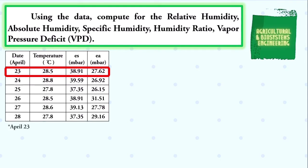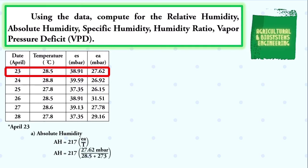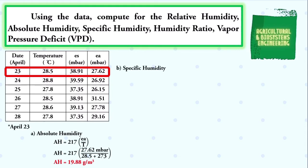We first solve for the absolute humidity. Using the formula AH = 217 × ea / T, we substitute the values: AH = 217 × 27.62 millibars / (28°C + 273). We simply solve and we have a final value for our absolute humidity of 19.88 grams per cubic meter.